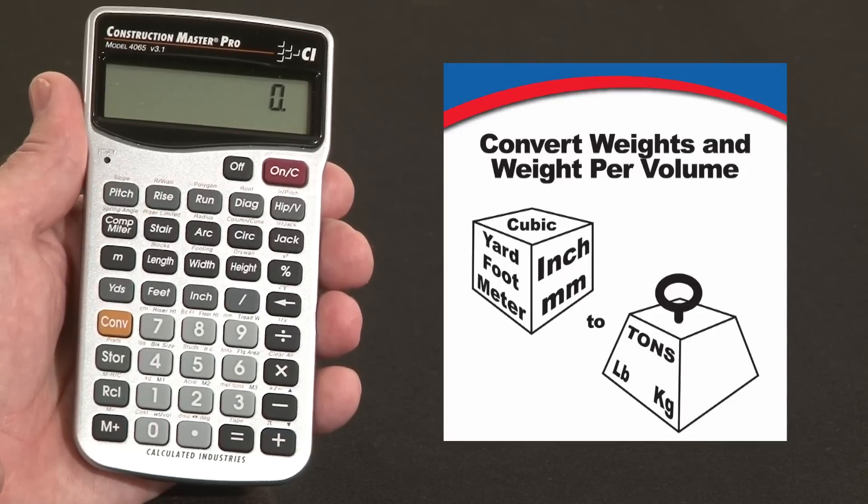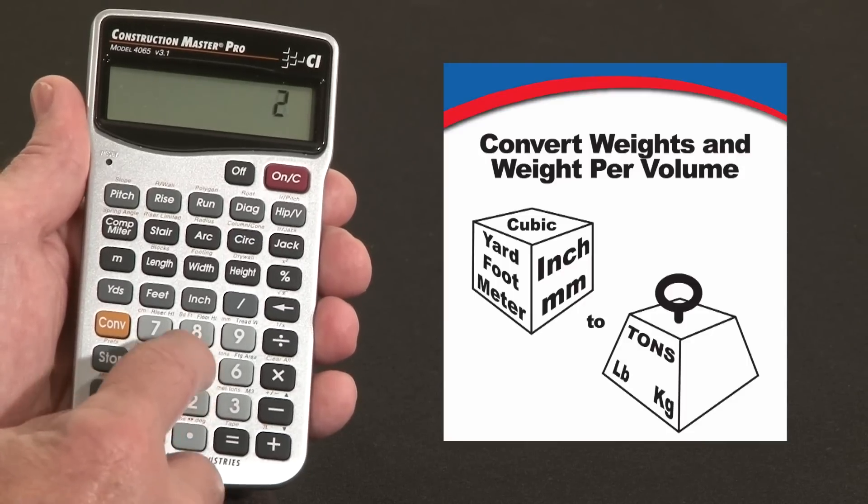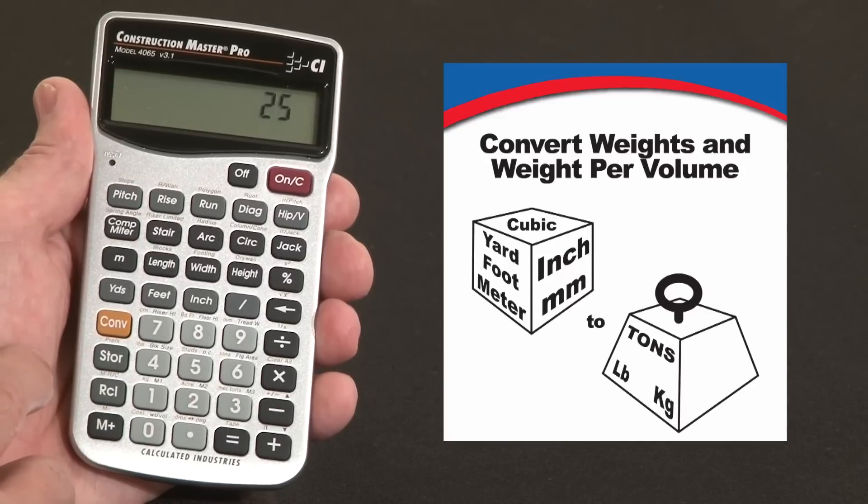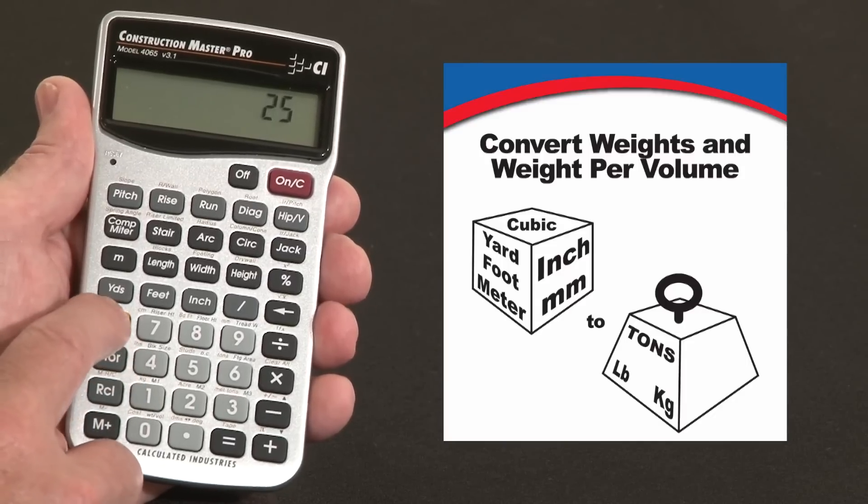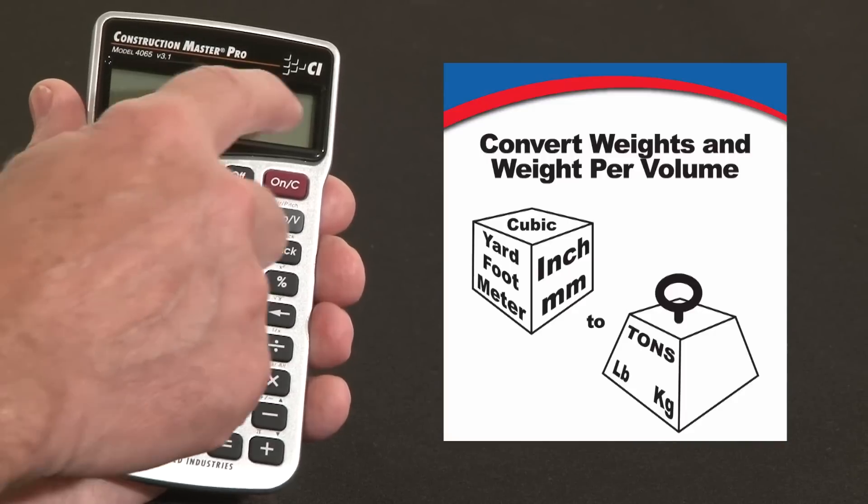Let me show you how to enter weight to begin with. Say you've got 25 pounds, 25, and over the 4 key, the second function is pounds. So I hit convert the 4, enters it as 25 pounds.